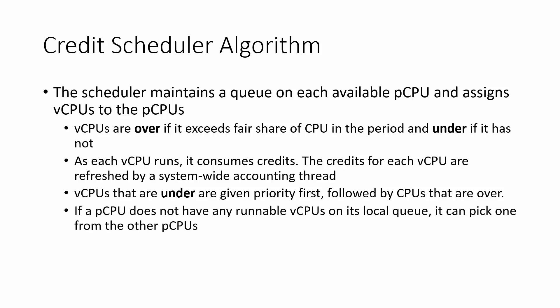If a physical CPU does not have any runnable vCPUs in its local queue, it picks one from the other physical CPUs. This ensures that no physical CPUs remain idle while there are virtual CPUs waiting to run.